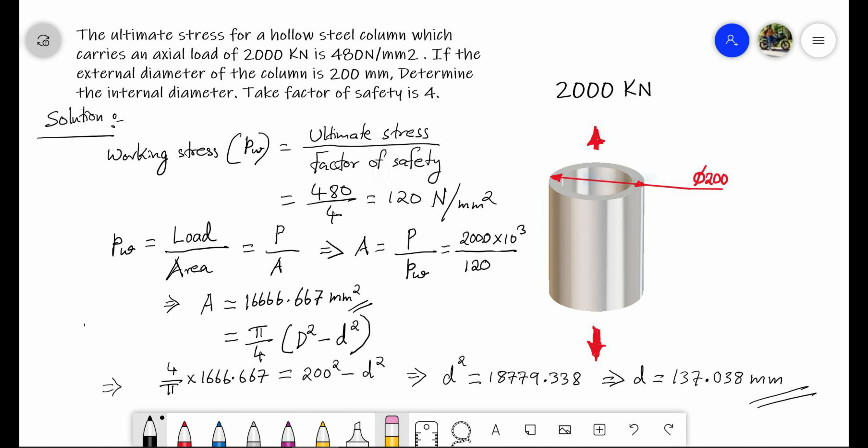Next, a cement concrete cube of 150 mm size crushes at a load of 337.5 kilo Newton. We have to find the working stress given a factor of safety of 3. Factor of safety is the ratio of ultimate stress to working stress. Ultimate stress equals crushing load by area of cross section; since it is a cube, area equals side length squared. Substituting gives ultimate stress as 15 Newton per mm squared, and working stress equals 15 divided by 3, giving 5 Newton per mm squared.